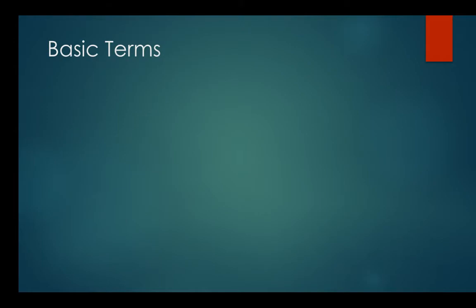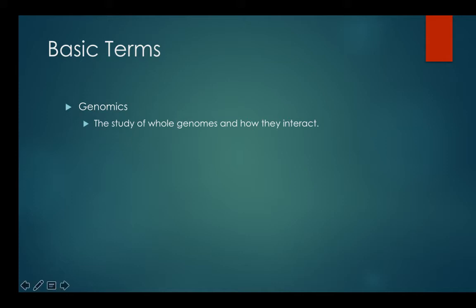Some basic terms I have to go over before I begin to explain this topic. The first one is something called genomics — basically the study of whole genomes and how they interact. So far we've only been looking at single genes one at a time, seeing what protein each gene makes. What genomics does is attempt to find out what all the genes do and how all the proteins interact. This is super hard and we are nowhere close to being done with this area of biology, but the goal is admirable.